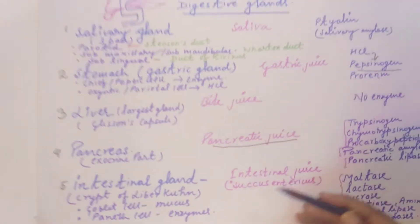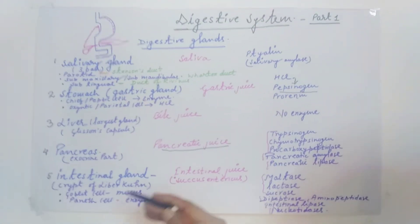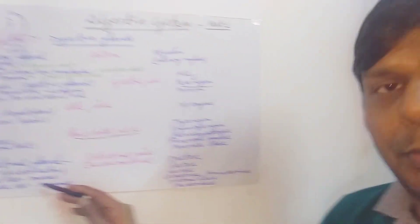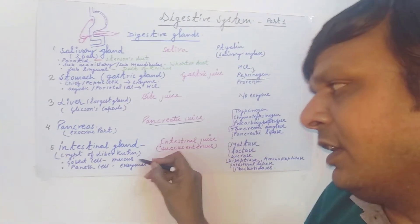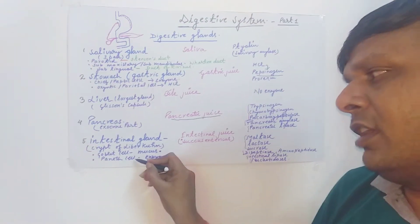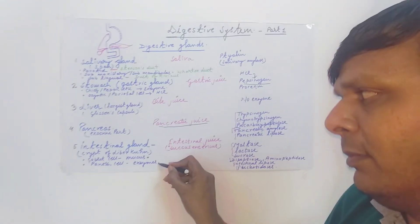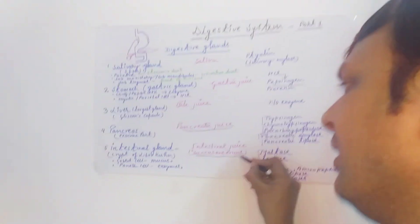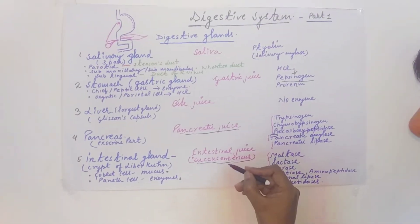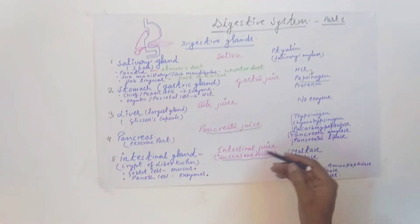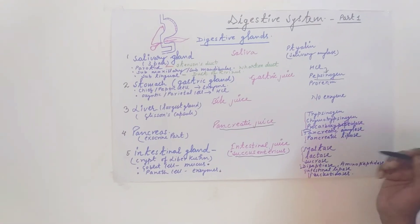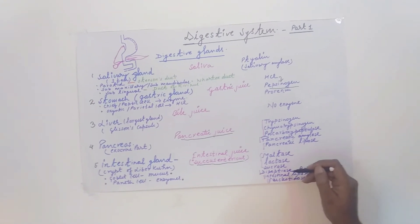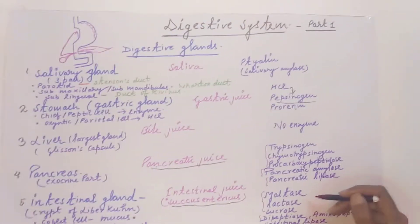Another gland is the intestinal gland, which mainly secretes intestinal juice. The intestinal gland generally has a crypt known as the crypt of Lieberkühn. This crypt has two different types of cells: goblet cells, which mainly secrete mucus, and other cells which mainly secrete enzymes. The intestinal juice is also known as succus entericus. This intestinal juice has simple carbohydrate or disaccharide-digesting enzymes.